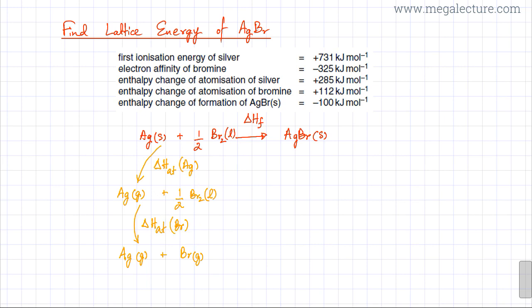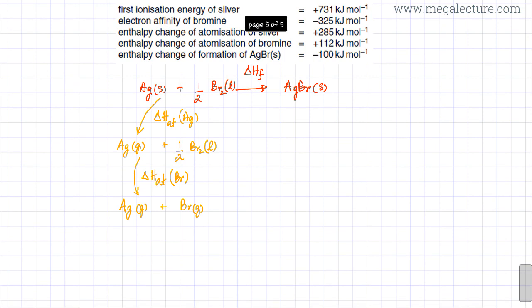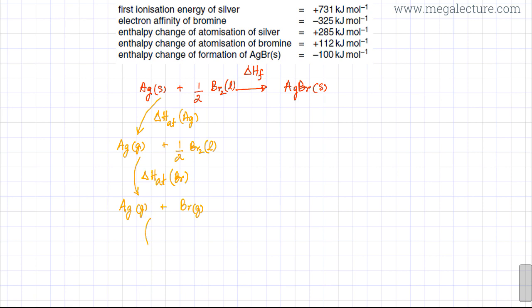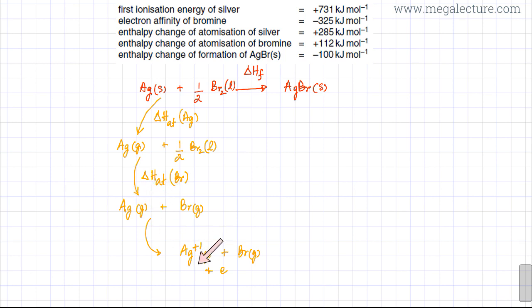We now have one mole of bromine atoms. In the next stage I have silver gaseous atoms and bromine gaseous atoms. To form AgBr I need ions — I need Br minus one and silver plus one. So I'm going to ionize silver: Ag loses an electron to form a plus one ion, still in gaseous state. This is the first ionization energy of silver, where silver gaseous atoms lose one mole of electrons to form one mole of Ag plus one.